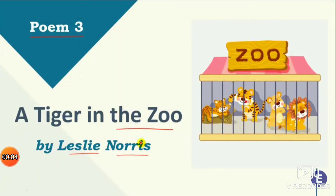Hello students, welcome to the English class, Standard 10. Today we are going to learn poem number three from the First Flight book: 'A Tiger in the Zoo' written by Leslie Norris. Leslie Norris is a prize-winning Welsh poet and short story writer who also taught at academic institutions in Britain and the United States.